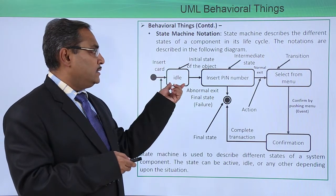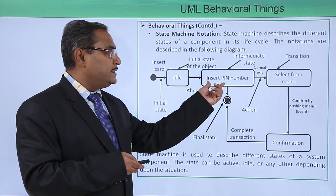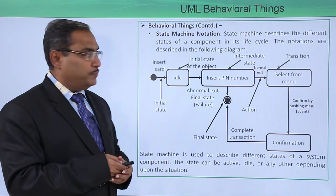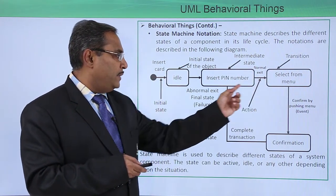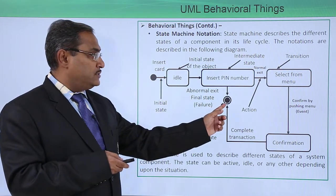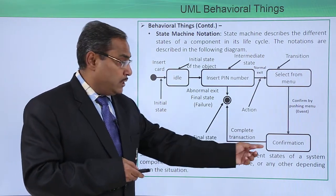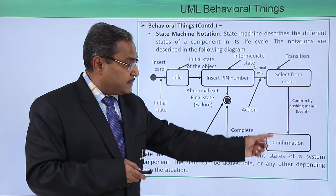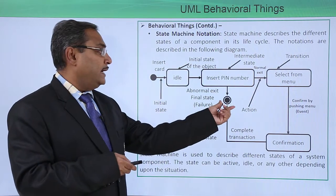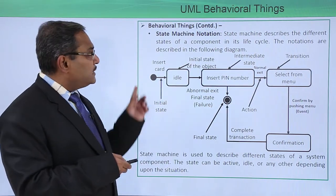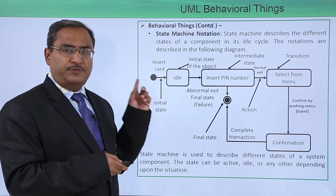In this ATM example: first, with 'insert card,' the object is in the idle state — the initial state. Then 'insert pin number' represents an intermediate state, followed by 'select from menu.' A normal exit leads to one path, while an abnormal exit reaches the final state. Selecting from the menu and confirming by pushing the button initiates an event — another state transition to a confirmation state — and from there the complete transition takes place to the terminating or final state. This is the state machine notation showing a state transition diagram.